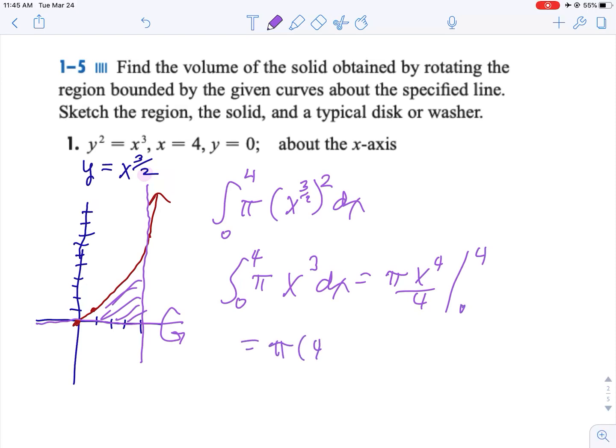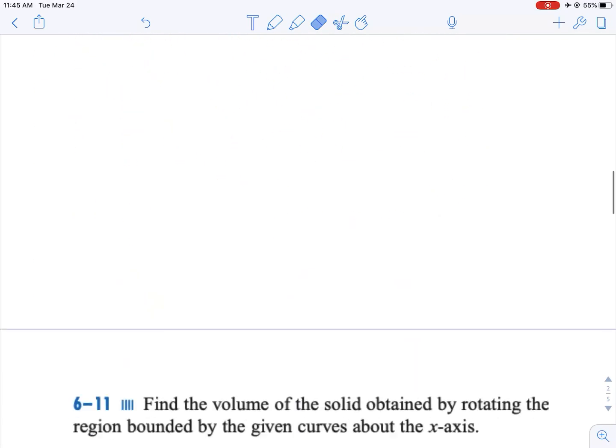That's pi x to the 4th over 4 from 0 to 4. So that's pi times 4 to the 4th over 4, which is 64 pi minus 0. And so that is the volume if you rotate that about. Think about it, it would look like this as you rotate it about that axis. So there is problem number 1.